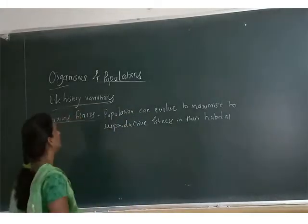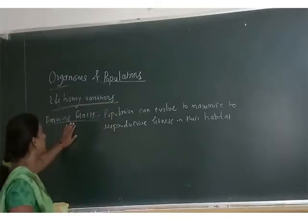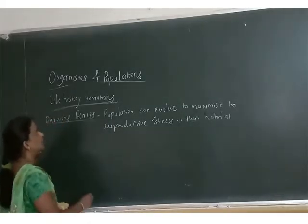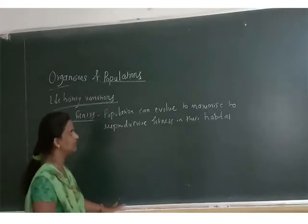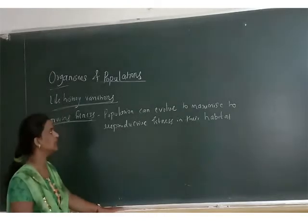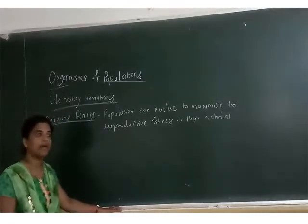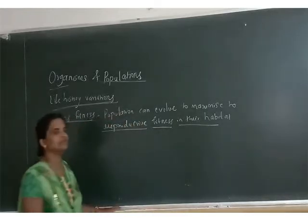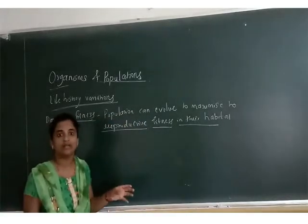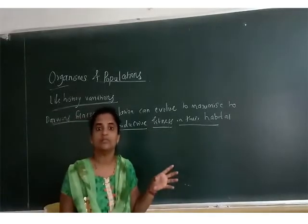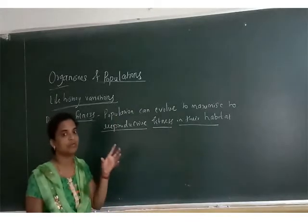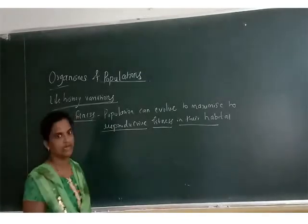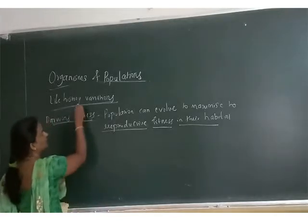In this class, we will start with life history variations, which is explained by Darwin. He explains different rules about evolution, and one of them is Darwin's fitness - that is, survival of the fittest. Here, he explains that populations can evolve to maximize reproductive fitness in their habitat.